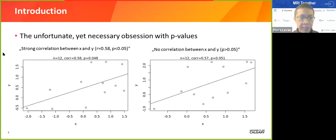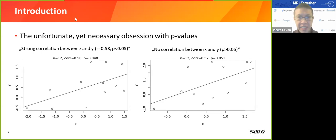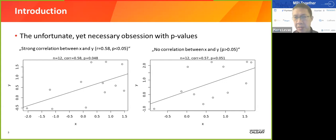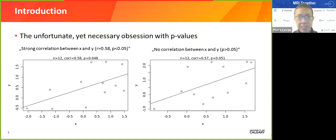As we've seen from previous speakers, we live in a world where there's an unfortunate yet sometimes necessary obsession with p-values. It seems that p-values represent the ground truth — everything we do is dictated by whether this p-value is less than or above 0.05. Here's an example with two datasets with a really small sample size of just 12.